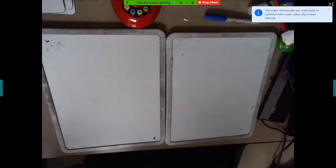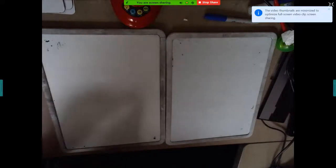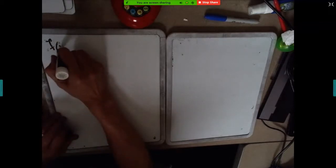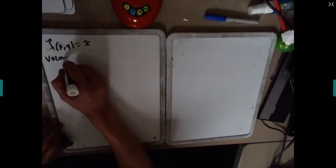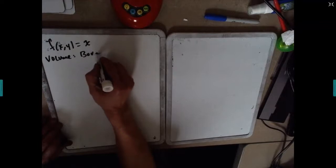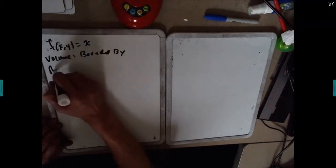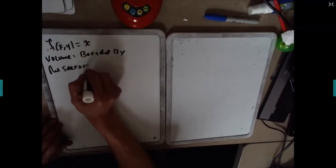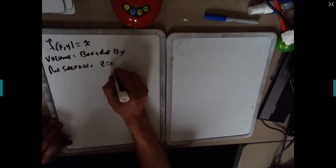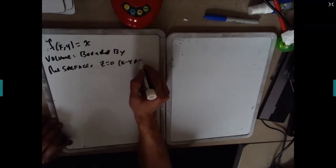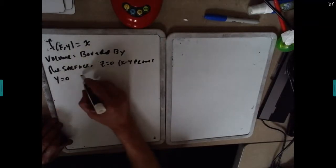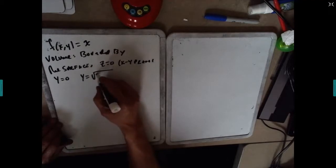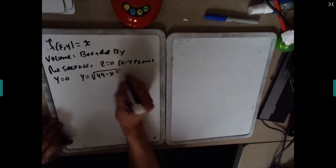Let's go ahead and do the following. You're given the function f(x,y) equals x, and you want to find the volume bounded by the surface z equals zero (the xy plane), and the boundaries y equals zero and y equals the square root of 49 minus x squared. Now the key word here is volume.